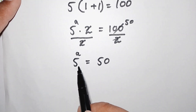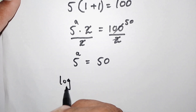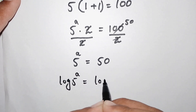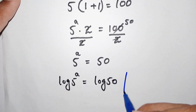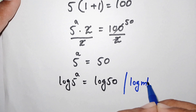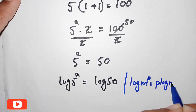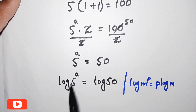In the next step, to solve this question we take log on both sides, so this becomes log of 5 to the power of a is equal to log of 50. We know that log of m to the power of p is equal to p times log of m.